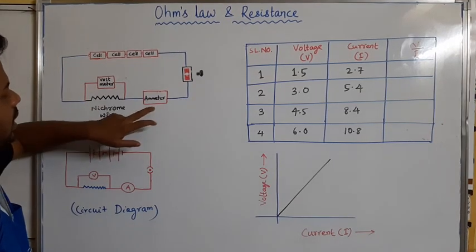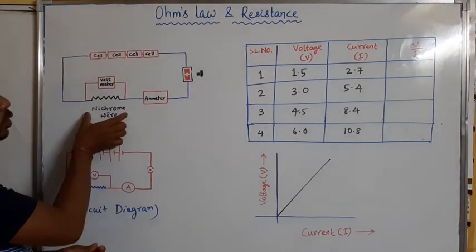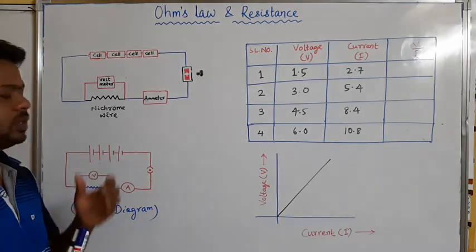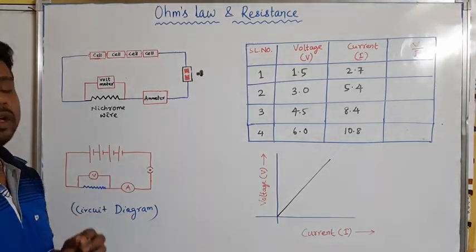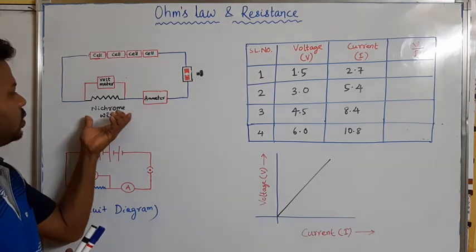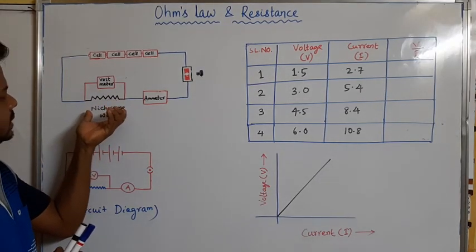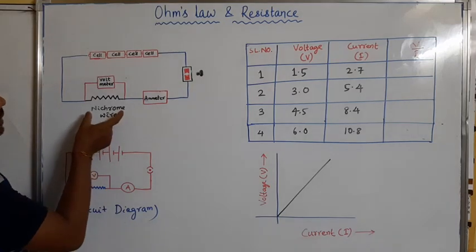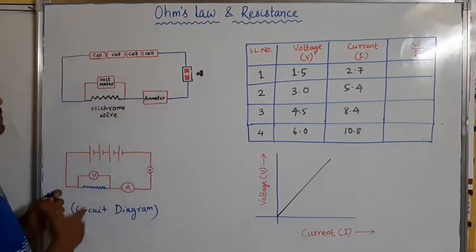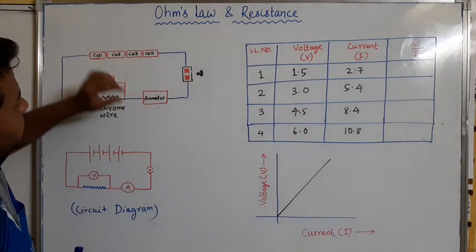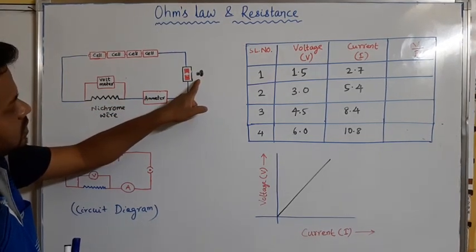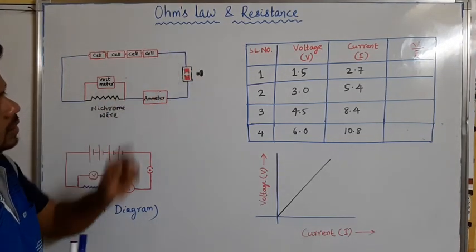The nichrome wire — nichrome is actually an alloy which is made up of nickel, chromium, manganese, and some amount of iron. So it is a mixture of two or more metals and non-metals, hence it is an alloy. The alloy name is nichrome, which has high resistance — that's why we are using it. These five things should be connected with the four cells, nichrome wire, ammeter, and switch key joined in a series connection.